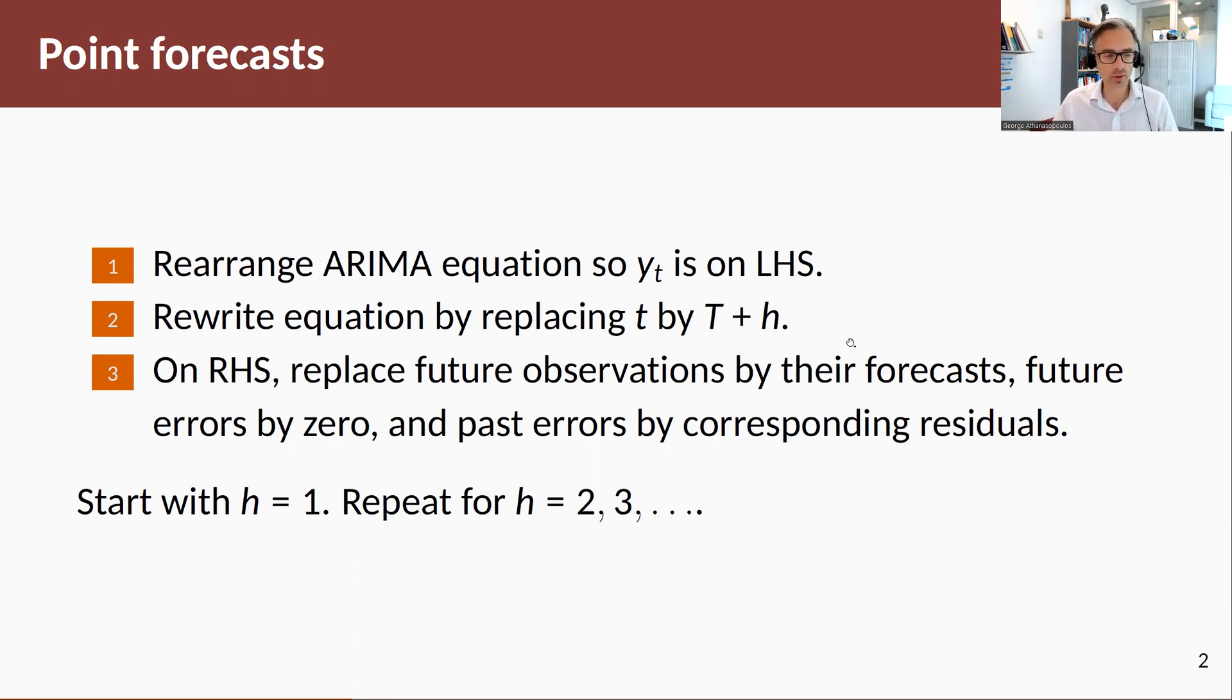So you will take the following steps. First, suppose you've identified a model and you've written it down in backshift operator notation. You would rearrange the ARIMA equation so that you get yt on the left-hand side. Then you would rewrite the equation or roll this model forward to get to out-of-sample periods, so replace t by something out of sample: t plus 1, t plus 2, t plus h.